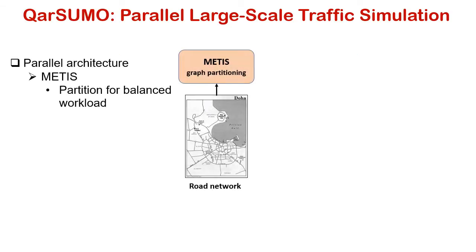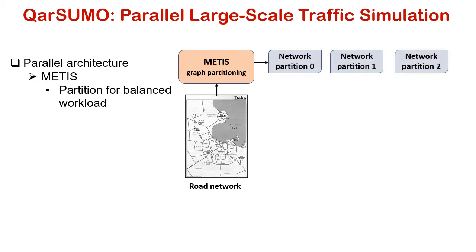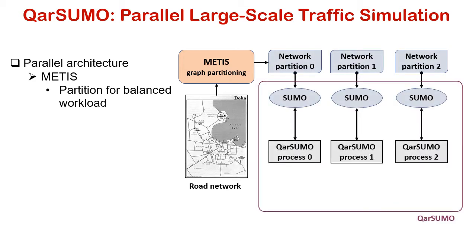CarSumo enables scalable traffic simulation by creating a parallel framework over Sumo. First, it uses the open-source graph partitioning tool METIS to partition the road network. Each partition is then handled by one CarSumo process, performing simulations with the original Sumo.